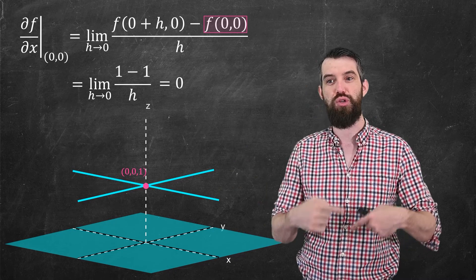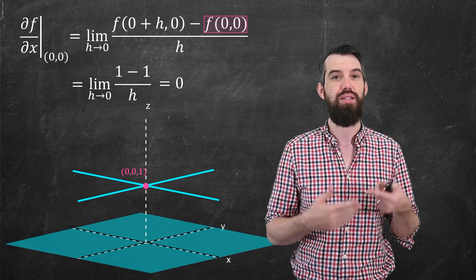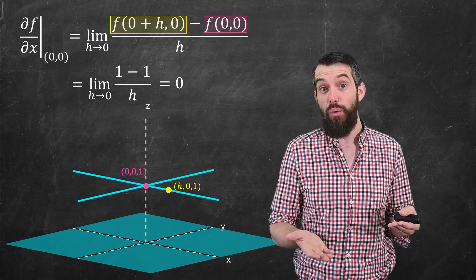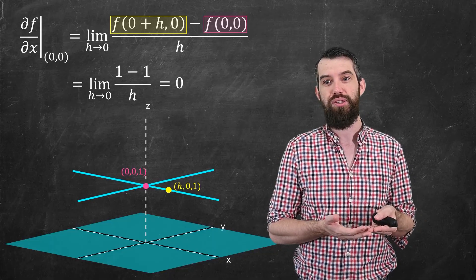To look at this a bit more visually, I've plotted the point, which is (0,0,1). That's what happens when you plug (0,0) into f. You get a height of 1. And then likewise, if I plug in the point (h,0), that also has a height of 1. So those two points, I can put them down. And then what do I think of the partial derivative?